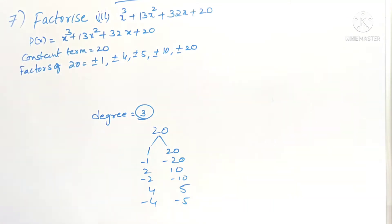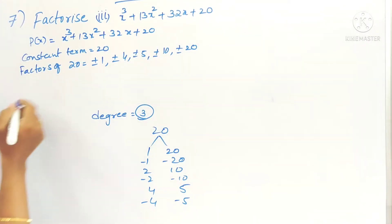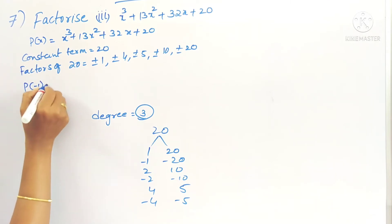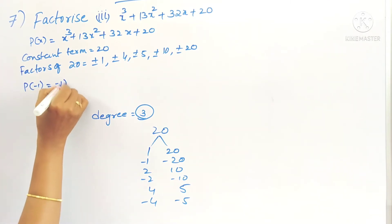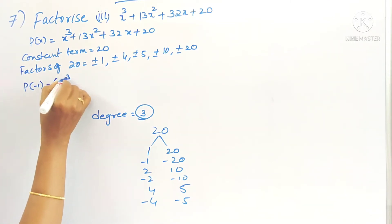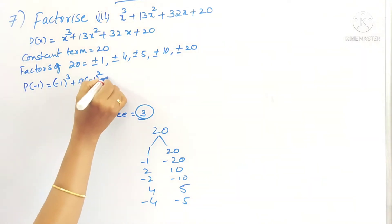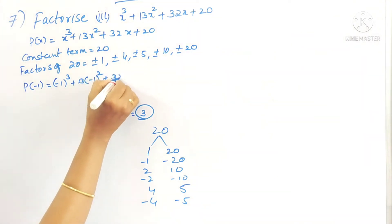Now we will check whether minus 1 is a factor of the given polynomial. We can check plus 1 as well, but let's check minus 1. So compute p(−1) by substituting minus 1 in place of x.